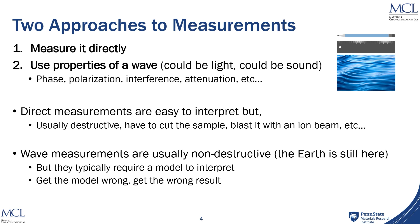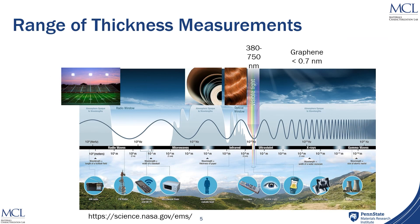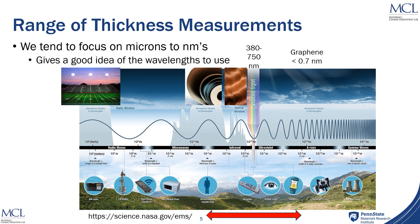It's helpful to compare the range of thickness measurements that we're going to be making, typically in the lab, to the electromagnetic spectrum. The electromagnetic spectrum ranges from radio waves, which might be on the size of a football field, all the way down to gamma rays that are smaller than the nucleus of an atom. Generally speaking, the range we're interested in goes from the thickness of a piece of paper at the millimeter scale down through microns. The wavelength of visible light is 380 to about 700 nanometers, and all the way down to the atomic limit — the distance between two layers of graphene in graphite would be less than about 0.7 nanometers. This gives you an idea of the types of wavelengths you might want to use to measure different thicknesses.